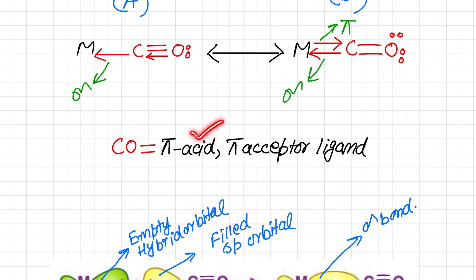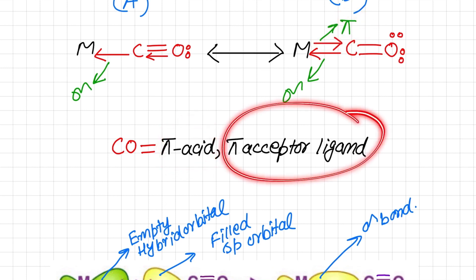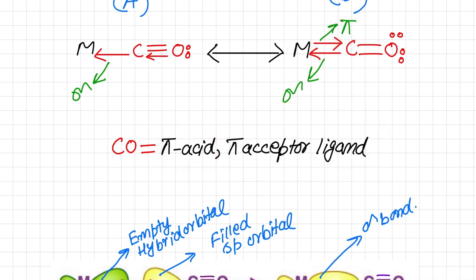Carbonyl is called a pi acid according to the Lewis acid-base concept. According to Lewis acid theory, when a species accepts an electron pair, it is called an acid. Since the carbonyl ligand is accepting this charge density through the pi bond, it is also called a pi acid or pi acceptor ligand.